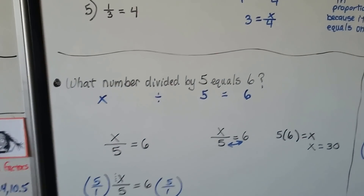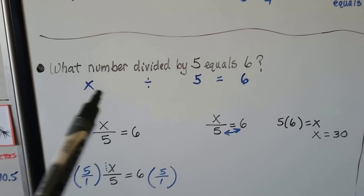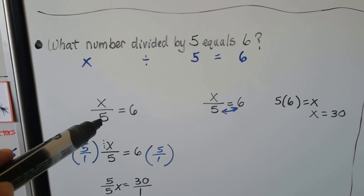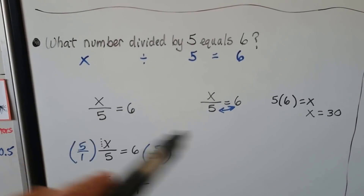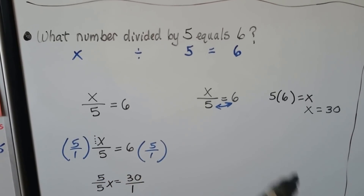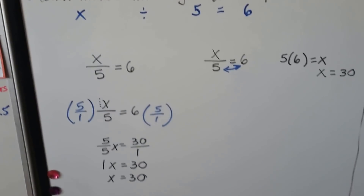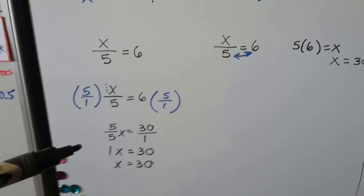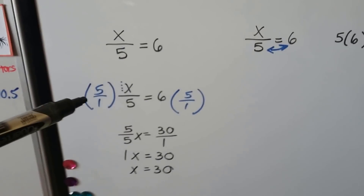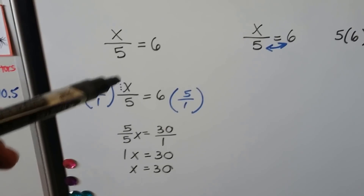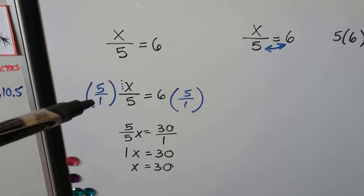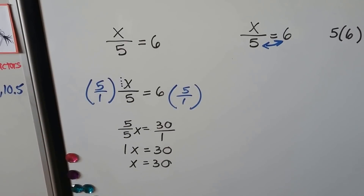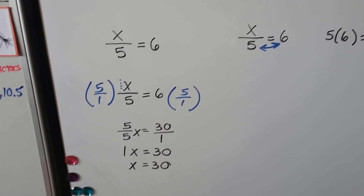This one says: what number divided by 5 equals 6? In algebra we write it x divided by 5 equals 6, or x over 5 equals 6. You might know the answer is 30, but to solve it the algebra way: there's an invisible 1, so we have 1 fifth. Flip it to 5 over 1 and multiply both sides. We get 5 over 5 equals 30 over 1, so 1x equals 30, which is x equals 30.